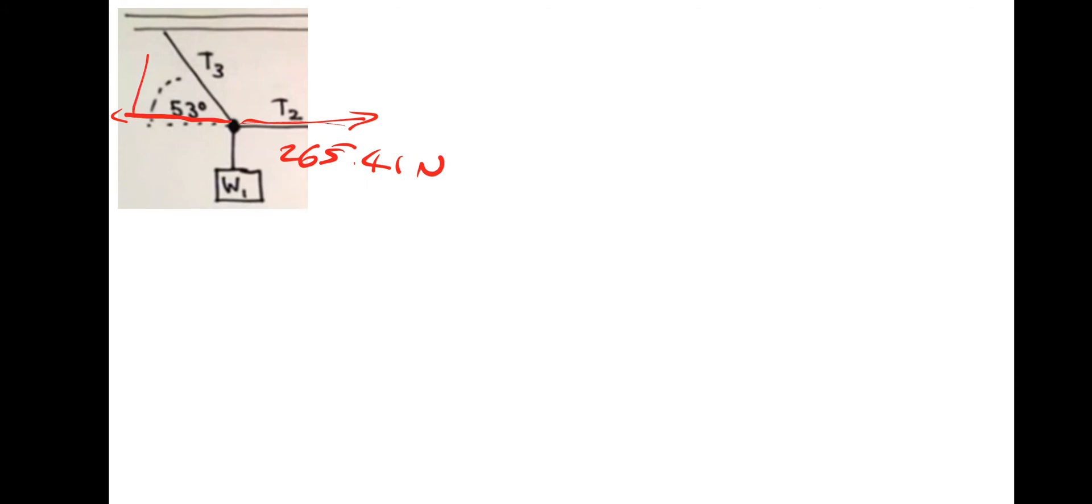So we can get T3 straight away. We've got a triangle. So let's label this up. So we've got the adjacent which is the 265.41. And we need the hypotenuse. So adjacent and hypotenuse is cos. So cos 53 is equal to adjacent divided by T3.